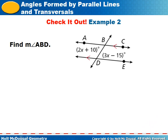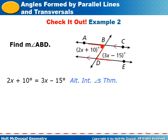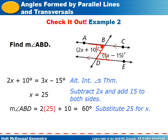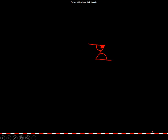Check it out: find angle ABD. ABD and the other angle shown are alternate interior angles, so they are congruent. Set them equal: solve for x by subtracting 2x from both sides and adding 15, giving x = 25. Plugging back in: 2(25) + 10 = 60 degrees. So the measure of angle ABD is 60 degrees.